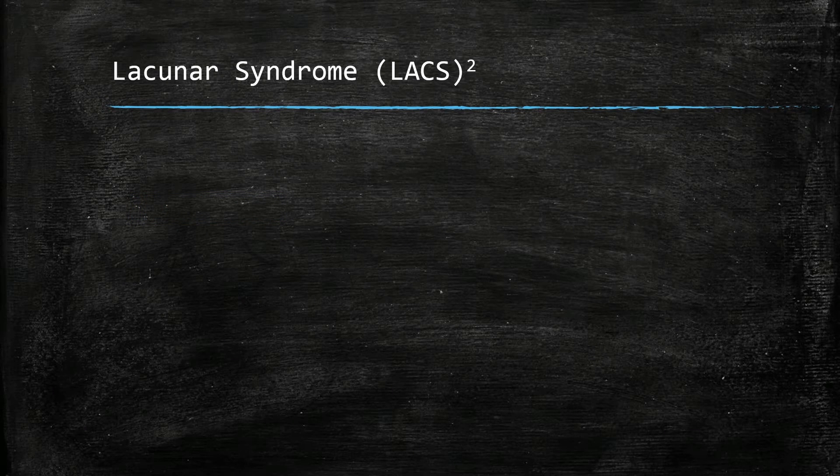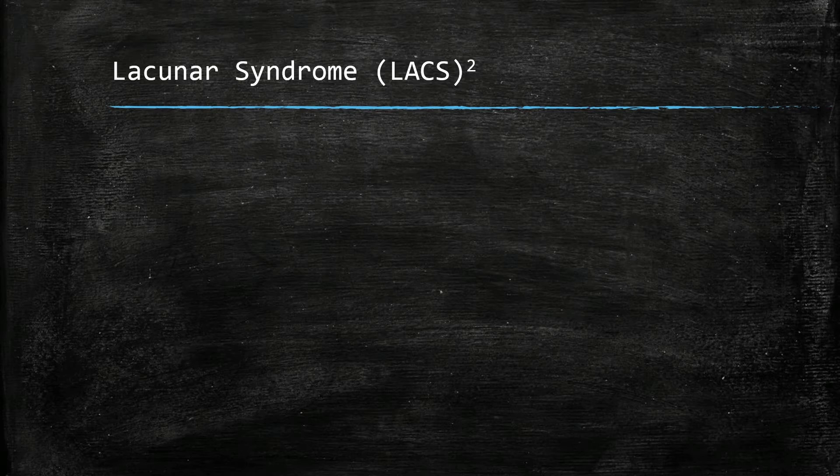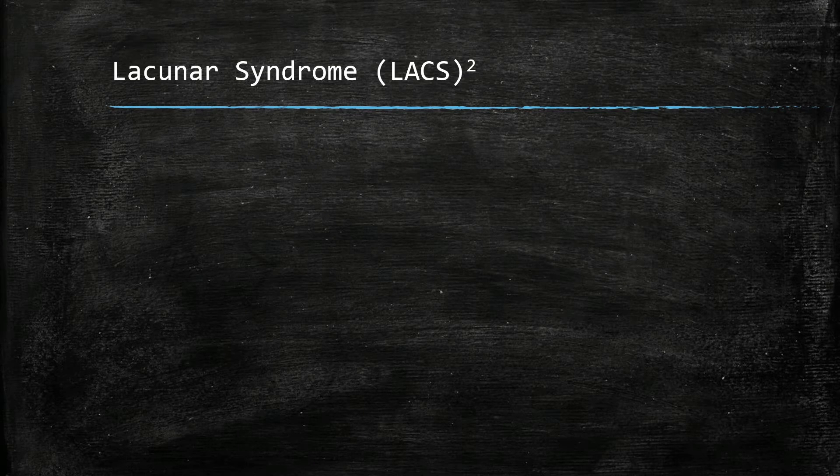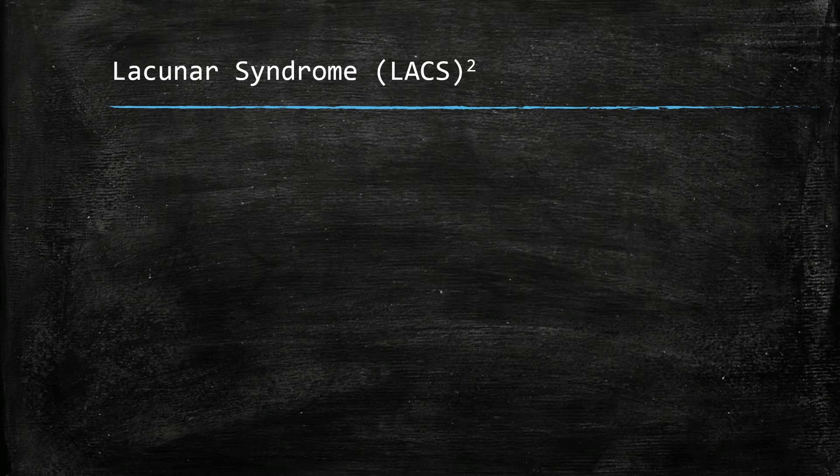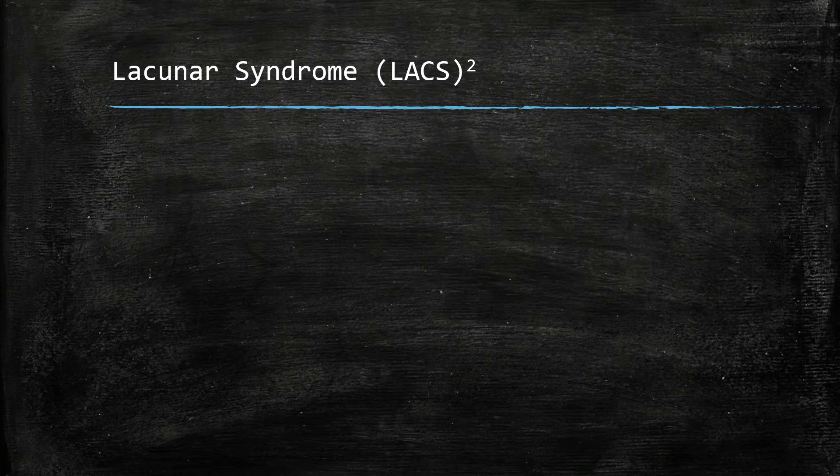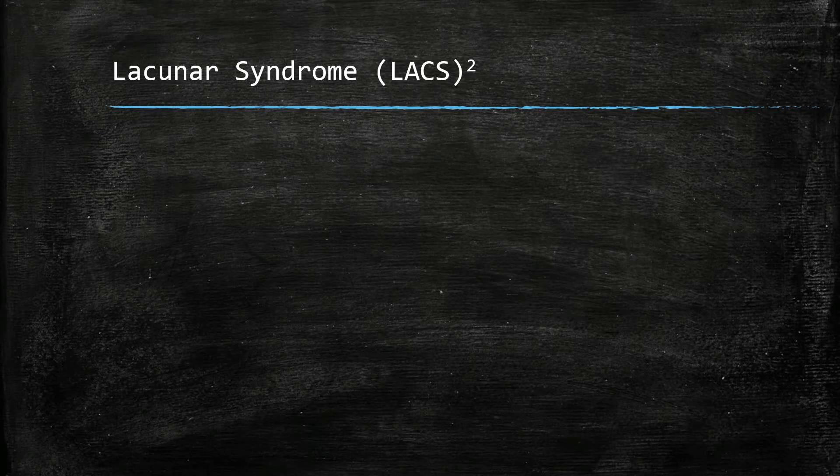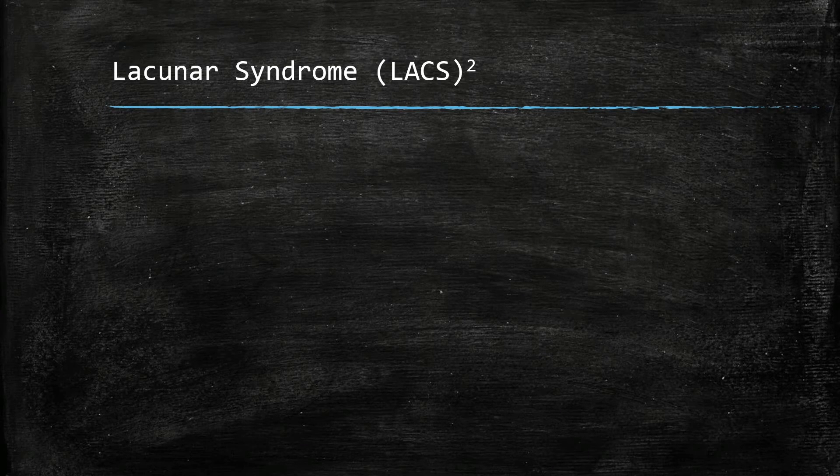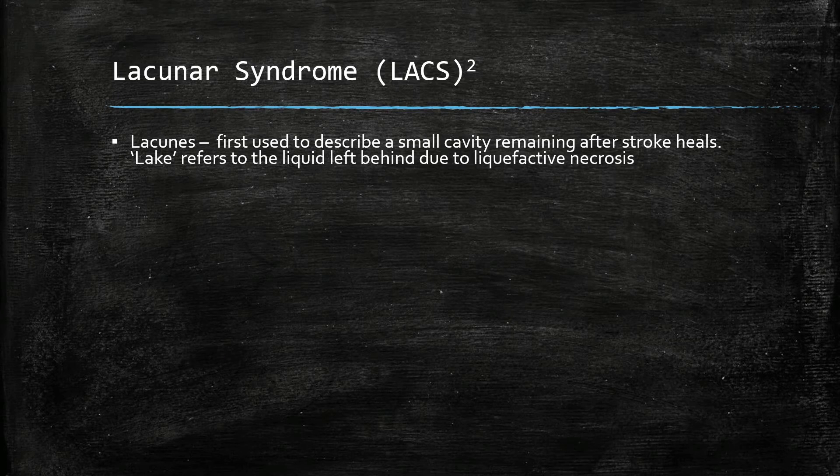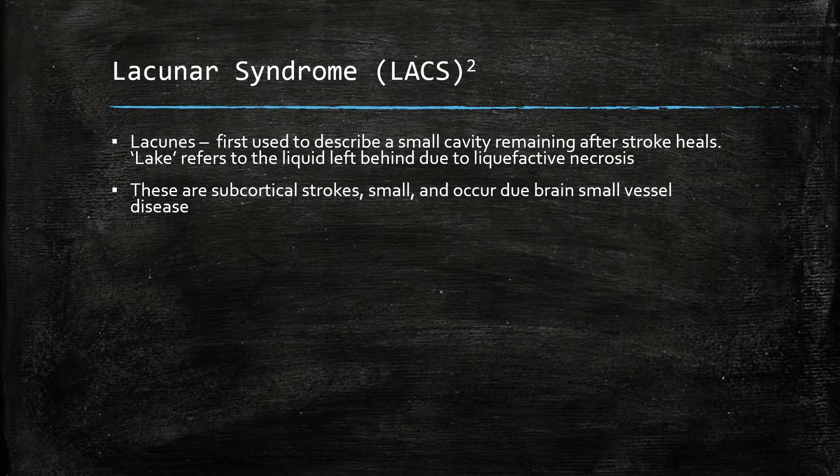Lacunar syndrome. Lacunes historically were used to describe a small cavity that remains after a stroke heals. Lake refers to the liquid of liquefactive necrosis of the brain. Lacunar infarcts are subcortical strokes, are small, and occur in the brain due to cerebral small vessel disease.